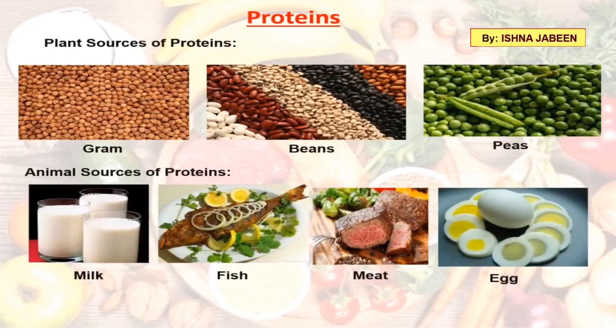Proteins are needed for the growth and repair of our body. Foods containing protein are also called bodybuilding foods. There are two types of sources of proteins: plant sources and animal sources. Plant sources include gram, beans, and peas. Animal sources include milk, fish, meat, and egg.